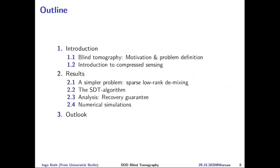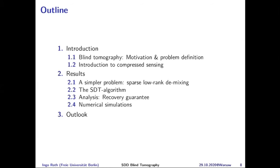The outline for the rest of the talk: after motivating the blind tomography problem, the results will show how to solve it. The key results are: relax the problem to a slightly simpler problem — the low-rank demixing problem; propose an efficient algorithm; equip it with theoretical guarantees; and test it in numerical simulations.